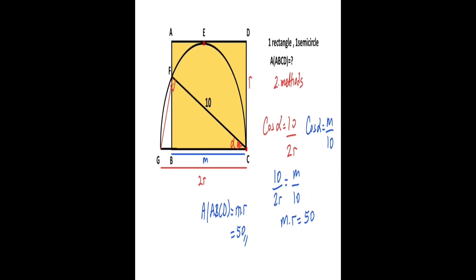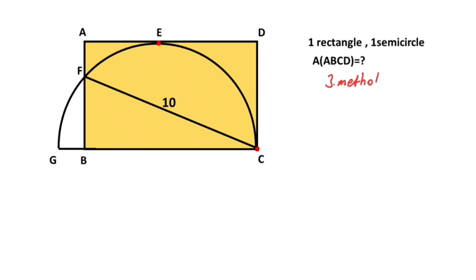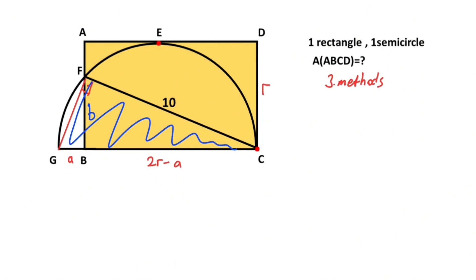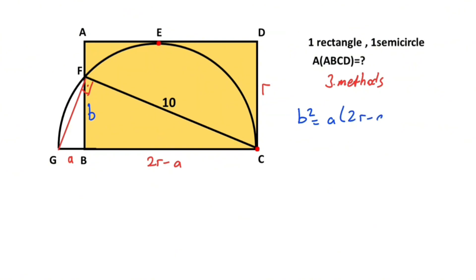Now let's calculate the area of the rectangle using the third method. Let's call this side r again, and here let's call it a, which means this side must equal r minus a. Then if we connect these two points, I want to represent this length with b. If you focus on triangle FGC, for this triangle if we apply the geometric mean theorem, b squared equals a times 2r minus a, so b squared equals 2ar minus a squared.